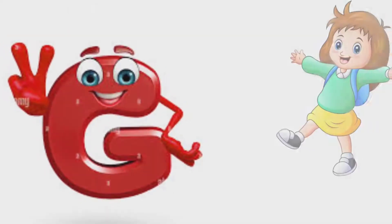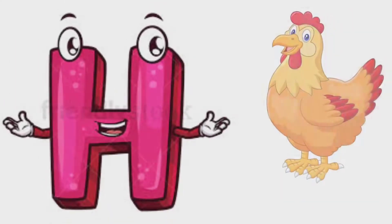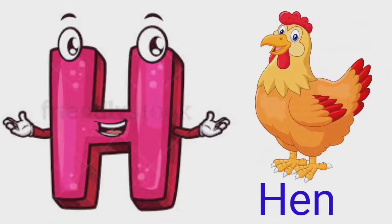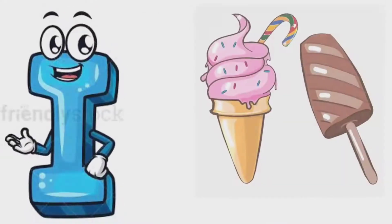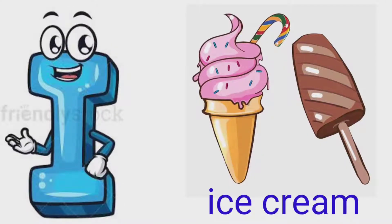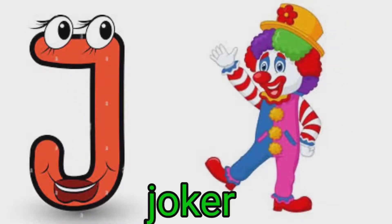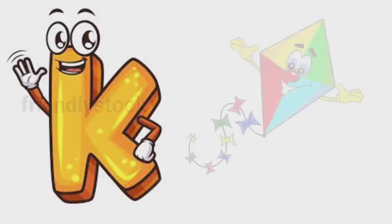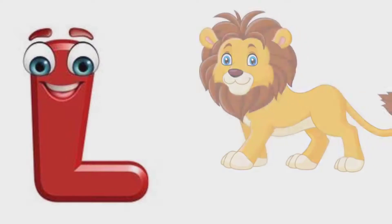G for girl, H for hen, I for ice cream, J for joker, K for kite, L for lion.